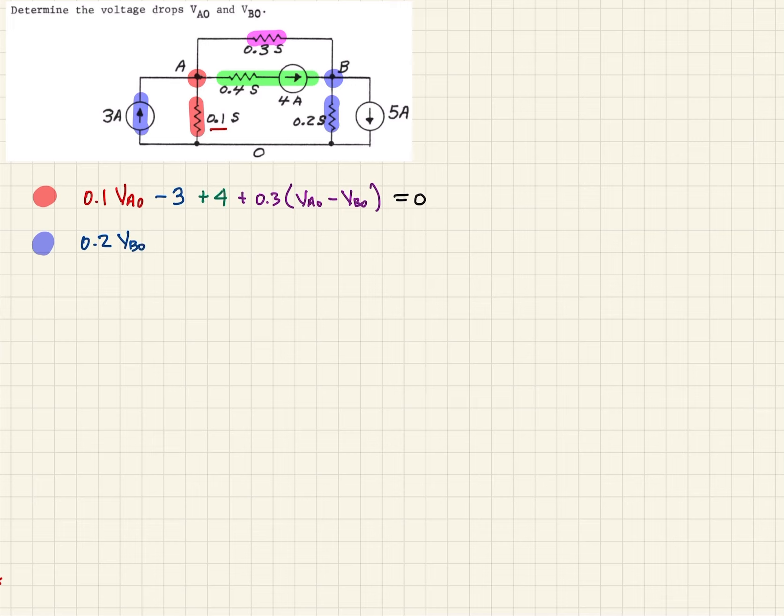All right, and then likewise we have a current source. Let's make that this color red. And that current source shows leaving the node, so it'll be positive. So then we'll say plus 5.